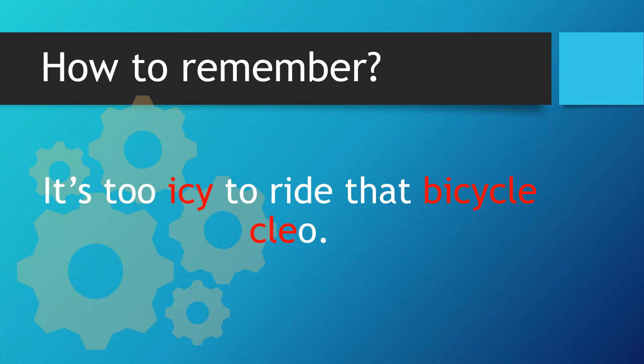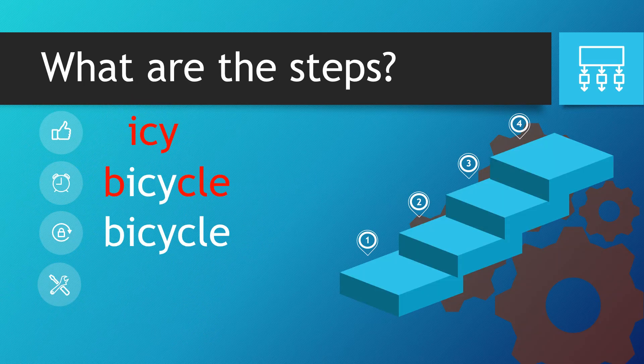The mnemonic is: 'It's too icy to ride that bicycle, Cleo.' So what are the steps? We take the word 'icy,' put the B in front of it, then the C, L, E from 'Cleo' goes at the end to create 'bicycle.' By having the word 'icy' at the start to help us, the 'y' gets in there straight away — that's the one that catches people out most.